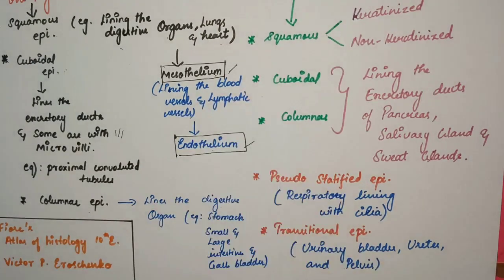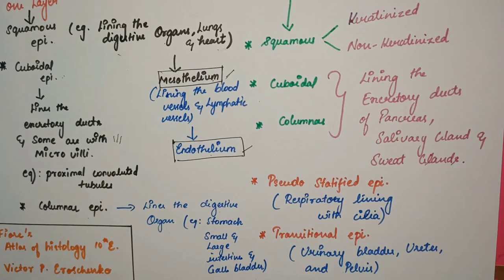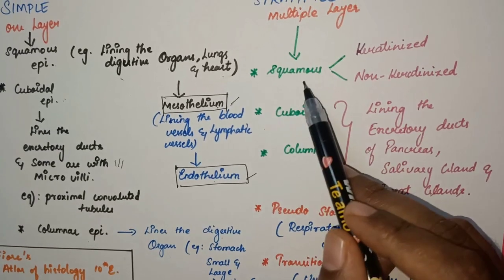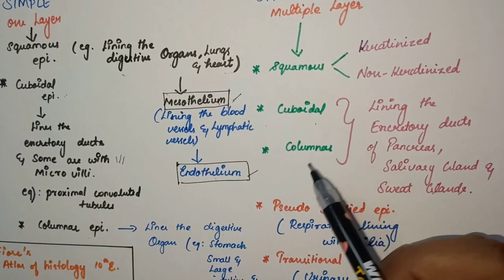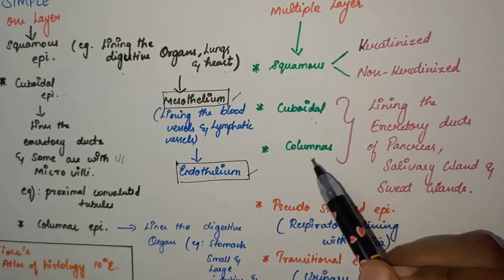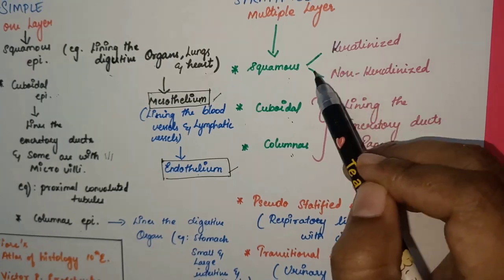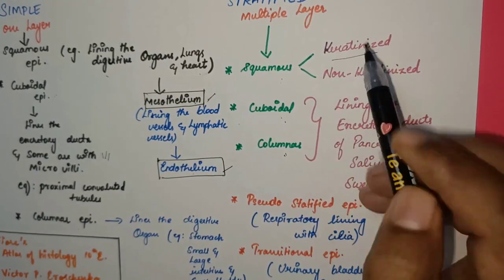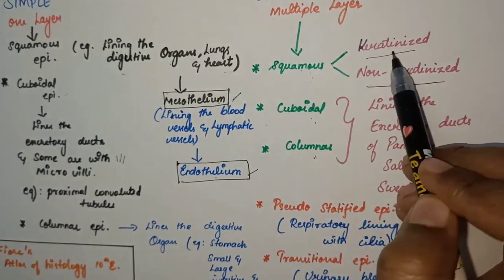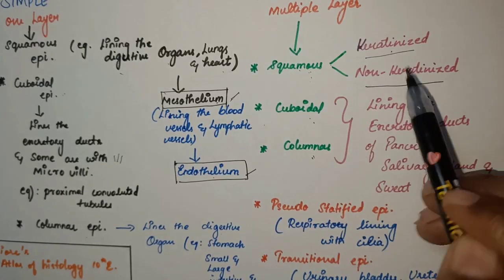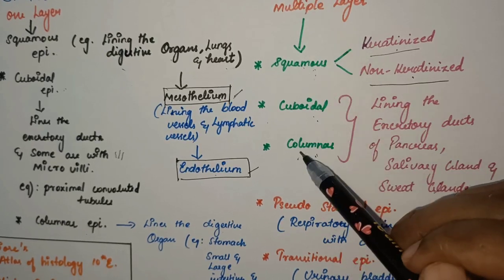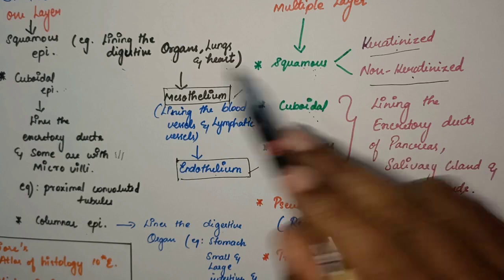Next we move on to stratified epithelium. As I mentioned, it consists of multiple layers. It has three sub-variants: stratified squamous epithelium, stratified cuboidal epithelium, and stratified columnar epithelium — similar to the simple epithelium classification.